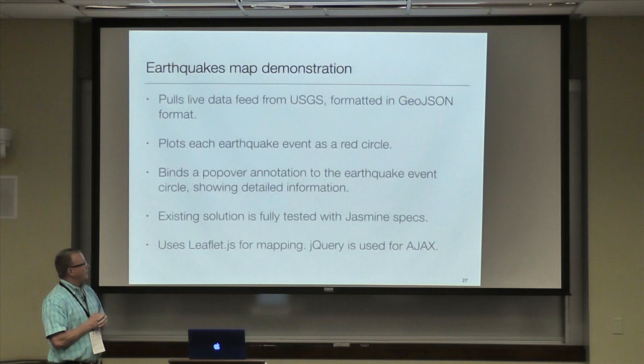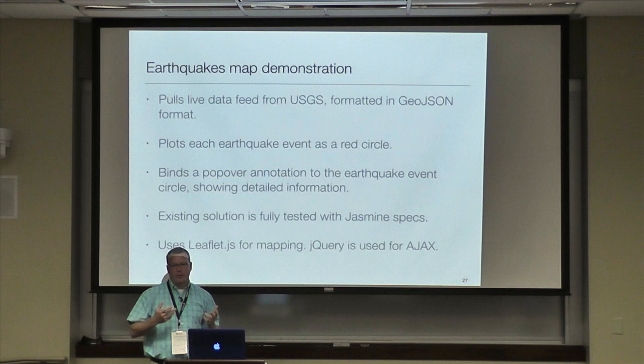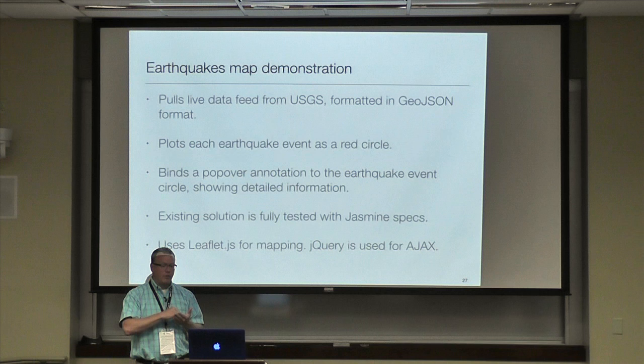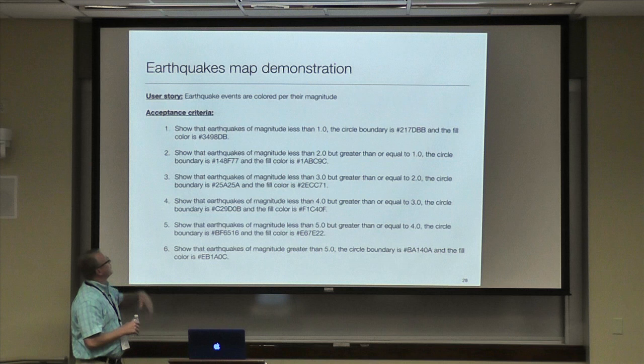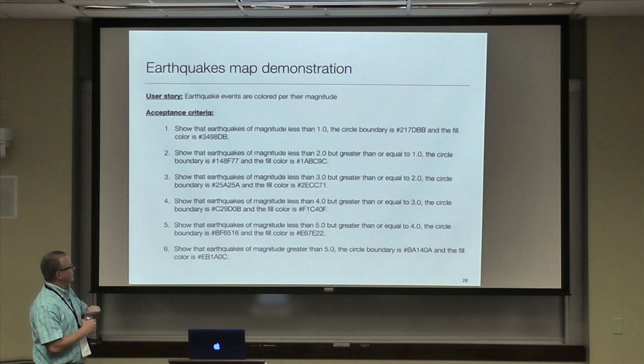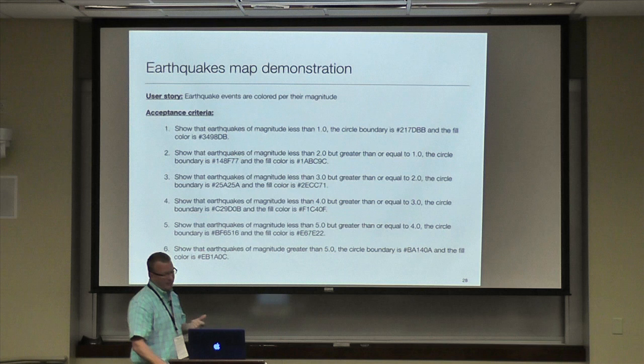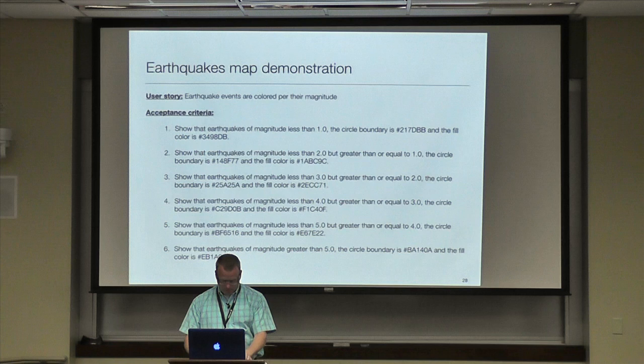What we're going to do is a little user story where we're going to change the solution so that earthquake event circles are colored by the magnitude of the earthquake. I have this in a text file — it's kind of a user story with some acceptance criteria, including the actual color values. Let me go to the code and show the map first.